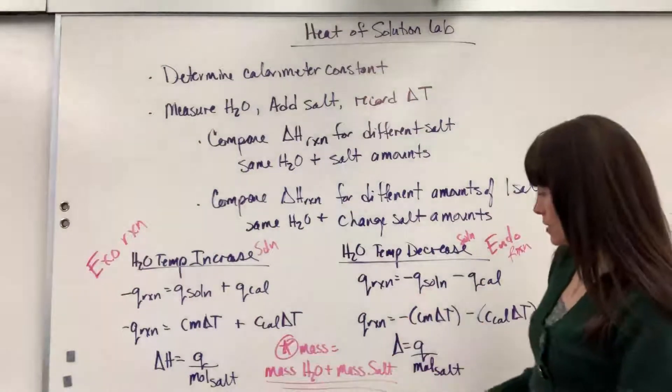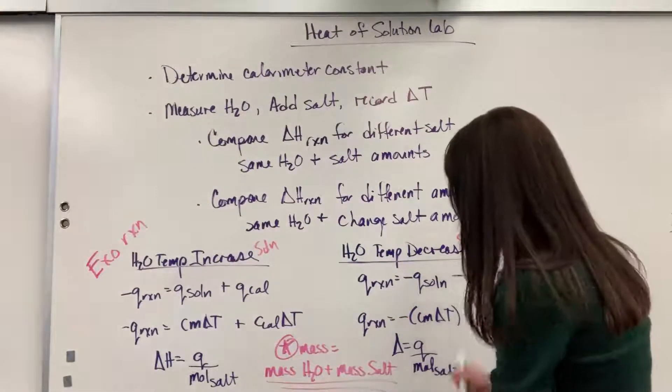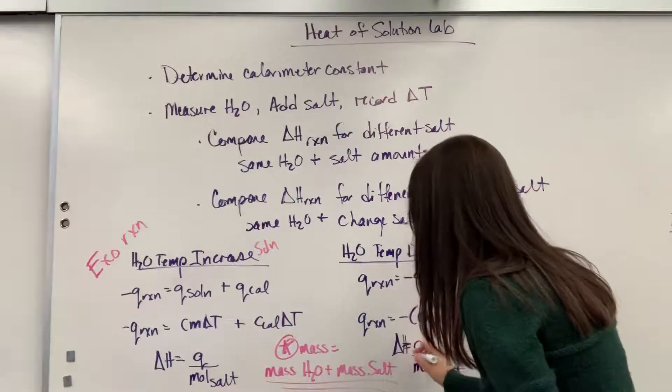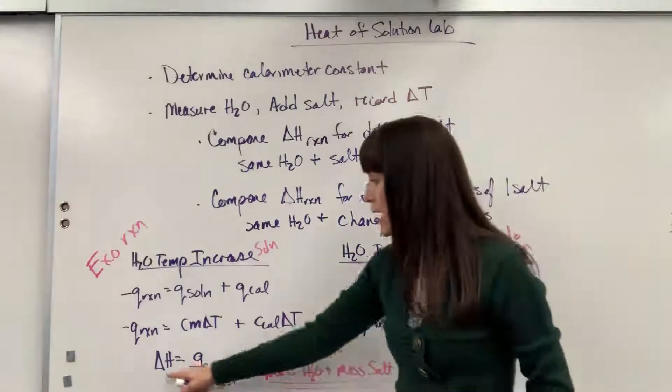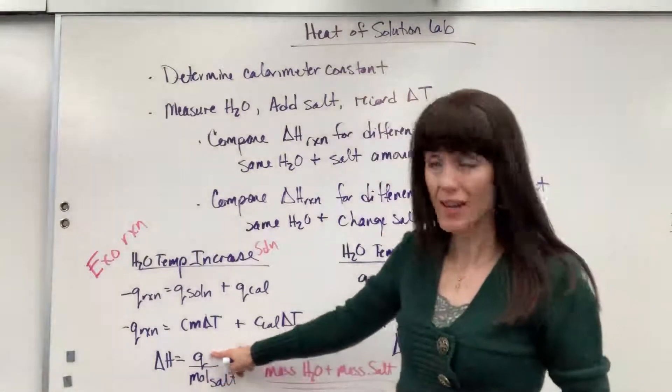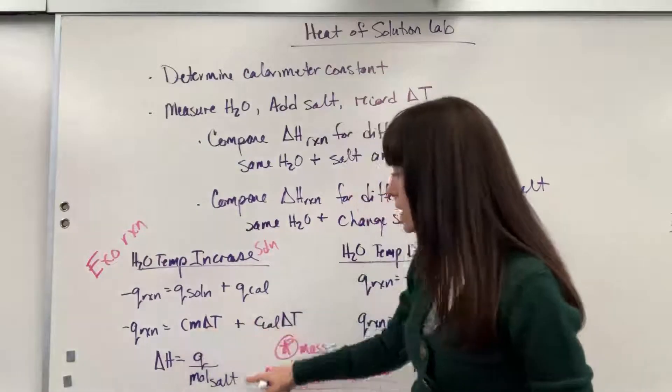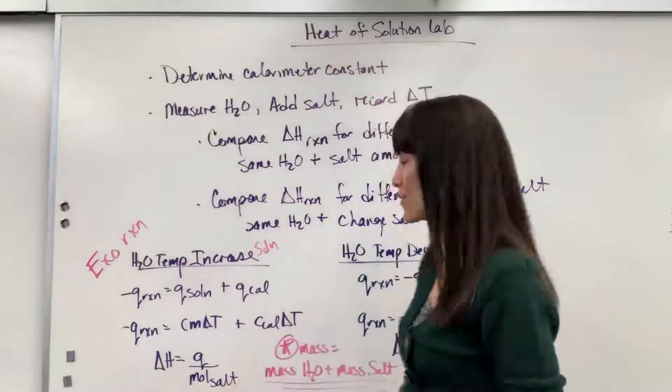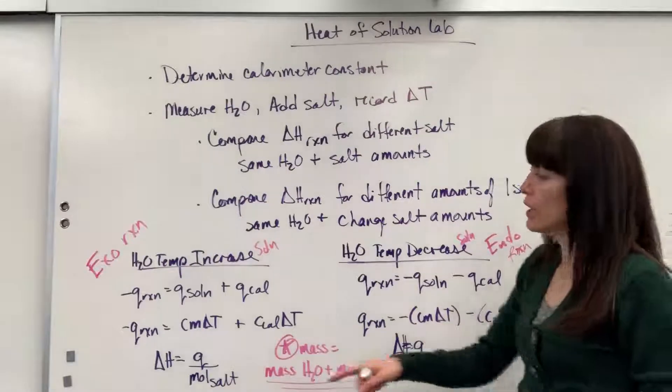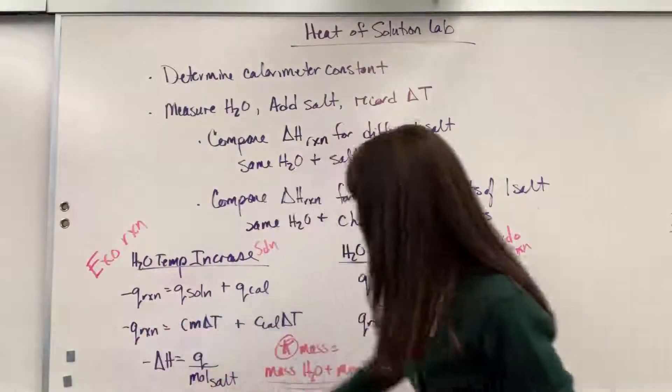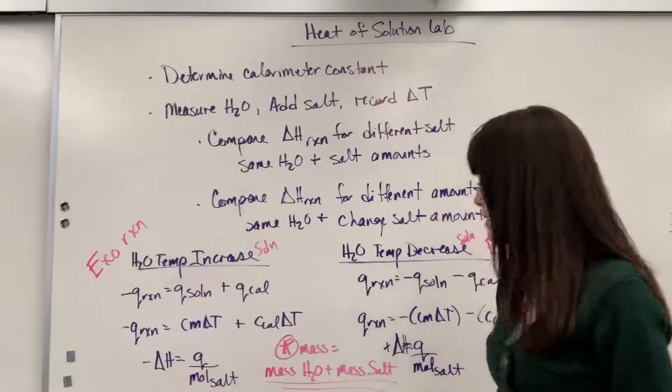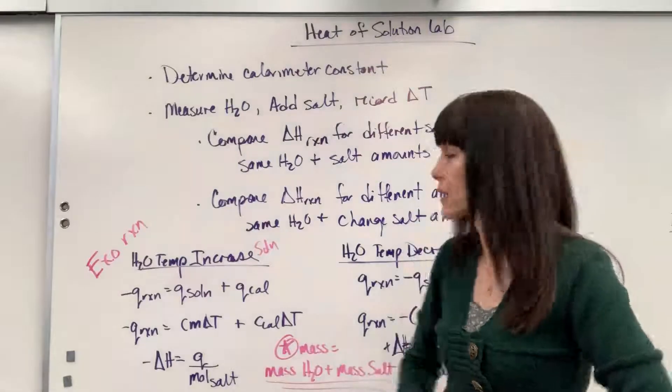Last thing that you need to know. To calculate delta H, sorry, that should be a delta H right there. To calculate delta H, you just take the energy that you determined from this reaction and divide it by the moles of salt, moles of salt that were used. Same thing over here. This will end up being negative because it's endothermic and this one will end up being positive because it's exothermic.